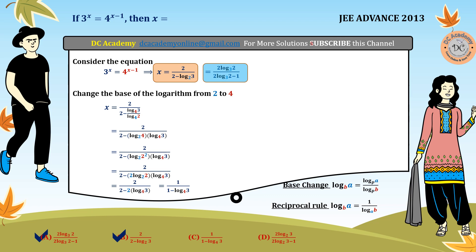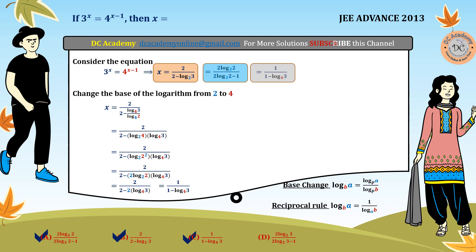We changed the base to 4 specifically because option C has base 4. This confirms option C is also correct. Regarding option D — since we already expressed x in terms of base 2, options A and D cannot both be distinct correct forms simultaneously. It is therefore clear that option D is false. Hence, the correct options for this problem are A, B, and C. Hope you understood the problem. Thank you.